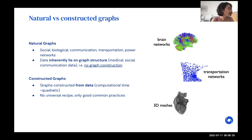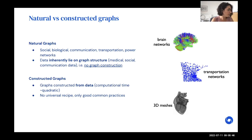The second class — constructed graphs — are more the focus of functional MRI and neuroimaging studies. These graphs are constructed from the data, and the computational cost is normally quadratic with respect to the number of nodes. It is quite tricky to construct those graphs as there's no universal recipe on how to do so, only some common good practices.